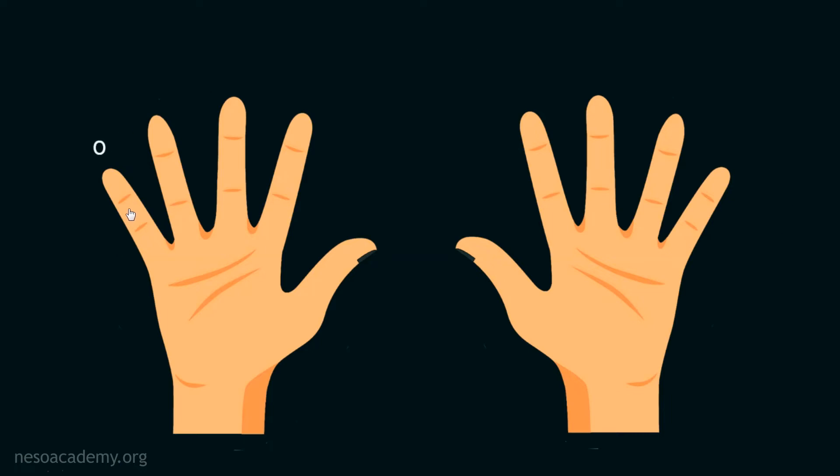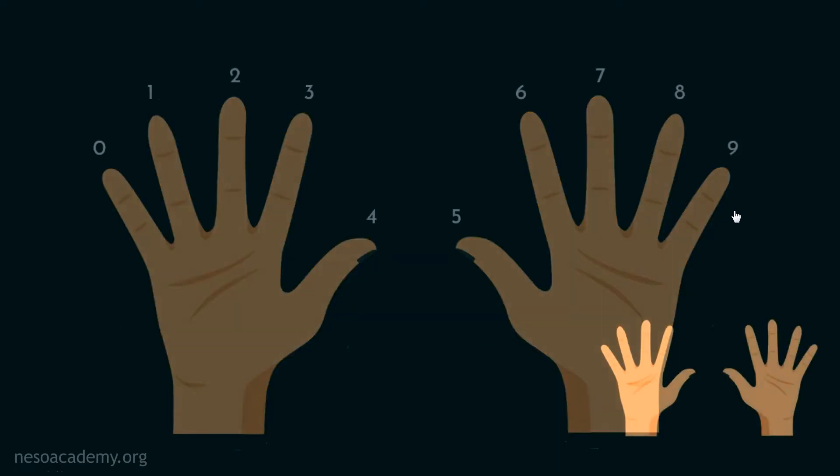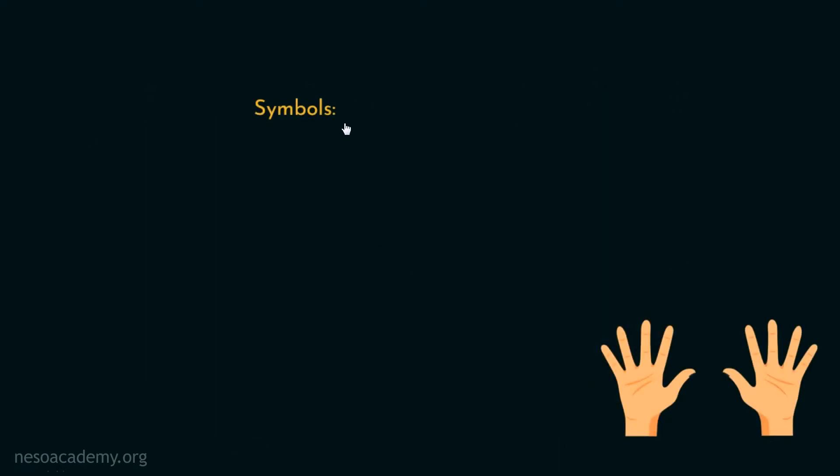The symbol zero is assigned to one finger, then the symbol one to another one, then the symbol two to another one, and then the symbol three, then the symbol four, five, six, seven, eight and nine. Basically, each finger specifies a different symbol. So, the symbols that we are using are 0, 1, 2, 3, 4, 5, 6, 7, 8 and 9. And the number of symbols is 10.